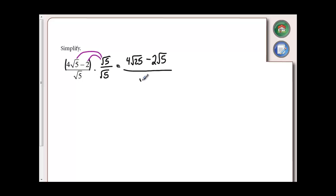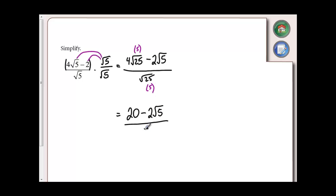On the bottom, again, I've got root 5 times root 5, which is root 25, similarly to the last example. I know that the square root of 25 is in fact 5, so both of these root 25s are going to reduce to 5. 4 times 5 gives me 20. The negative 2 root 5 is already in lowest terms, and the square root of 25 is 5. Now the last step is to check if I can simplify by finding a number that can be divided out of all three of my coefficients. There's nothing that goes into 20, 2, and 5, so I'm done. It is in lowest terms.